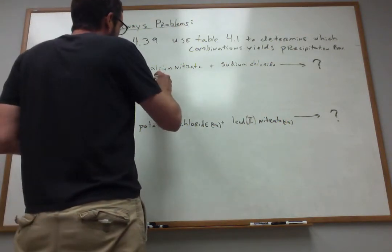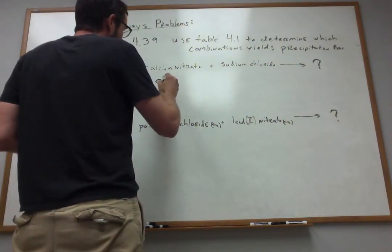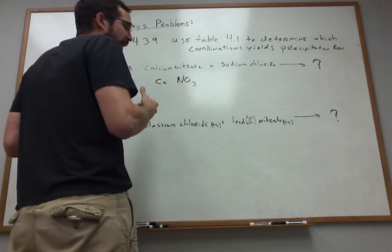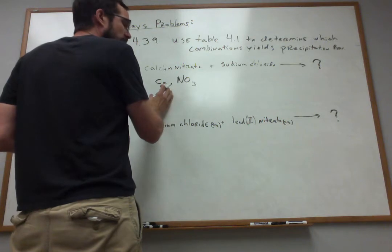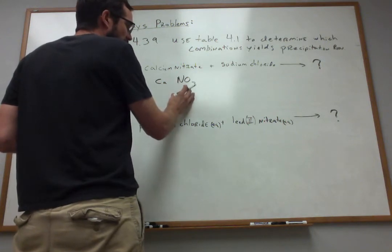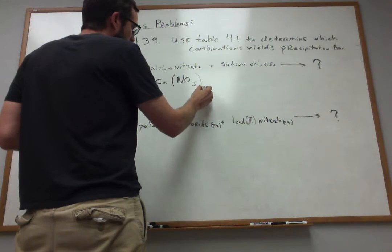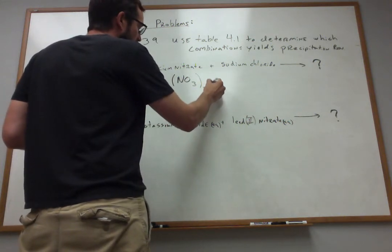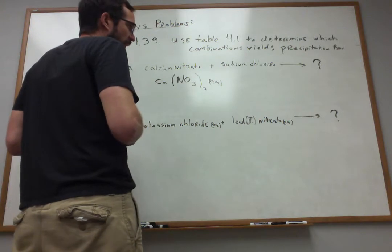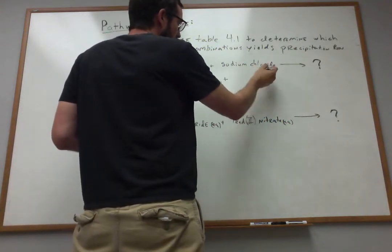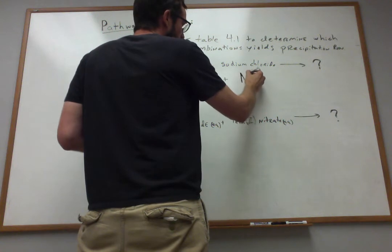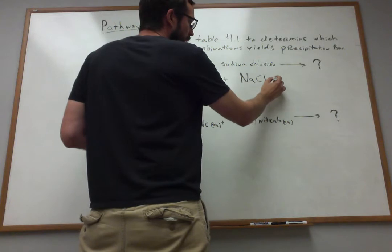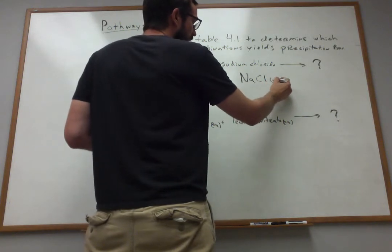The first one is calcium nitrate. Calcium is Ca. Nitrate — I hope you remember — is NO₃⁻. Calcium has a 2+ charge and nitrate is only minus 1, so to balance the charges, I need Ca(NO₃)₂, and this is aqueous, denoting that this is an aqueous phase reaction. Now I'm going to mix that with sodium chloride. Hopefully everybody knows sodium chloride is NaCl — plus 1 and minus 1 — and this is also aqueous.